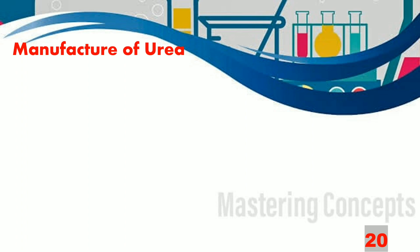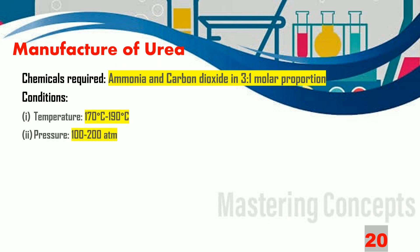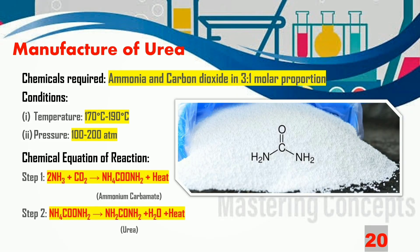Lastly, let us find out how urea is manufactured from ammonia gas. The chemicals required are ammonia and carbon dioxide in a 3:1 molar proportion. The temperature is maintained between 170 to 190°C and the pressure between 100 to 200 atmospheres. In the first step, ammonia and carbon dioxide react to form ammonium carbamate (NH4COONH2). In the second step, it is converted to urea (NH2CONH2) and water.